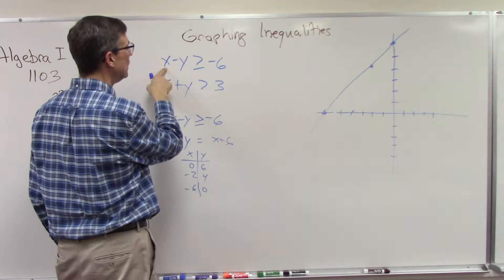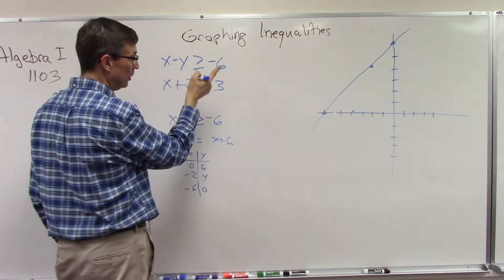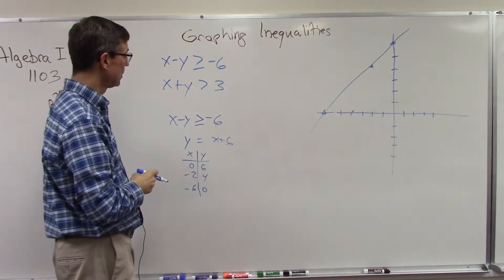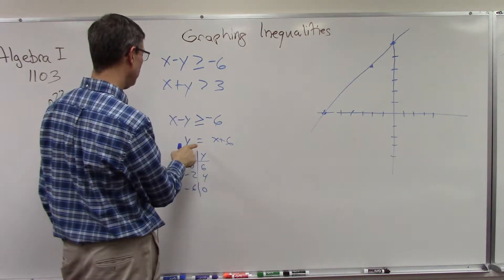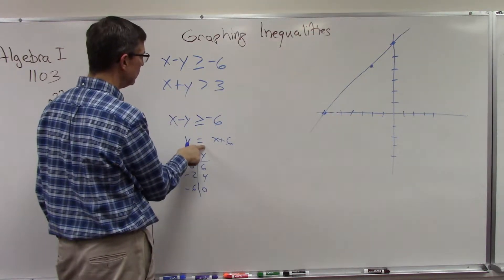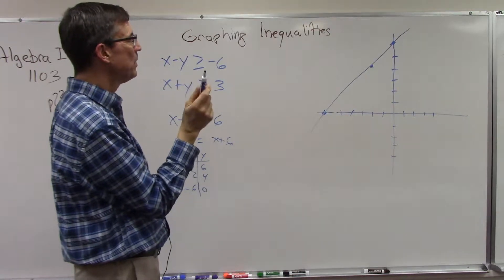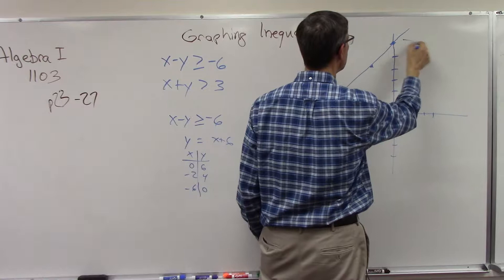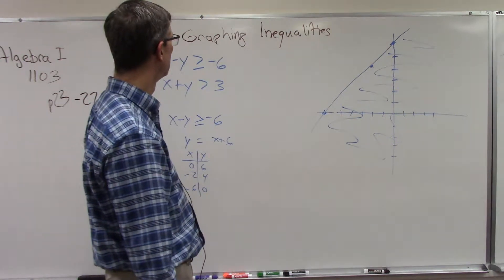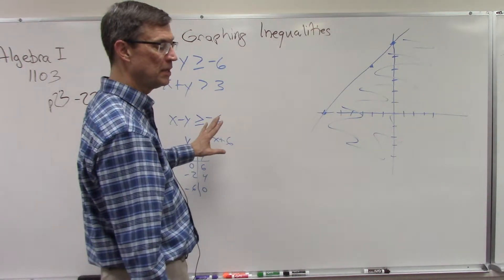You ask yourself, does that point zero zero, if I plug that in here, make this a true statement? Zero minus zero, which is zero, is greater than or equal to negative six. Is that true? Yes. So actually that's the best way because I can see now that since I plugged in zero zero, I'm going to shade in on this side of that line.